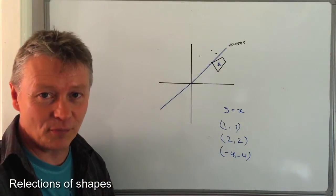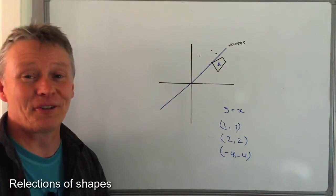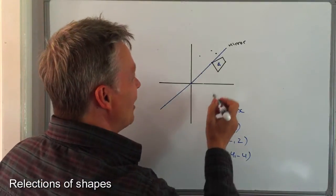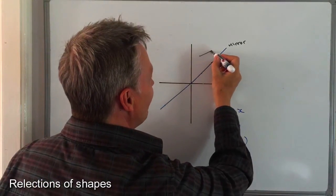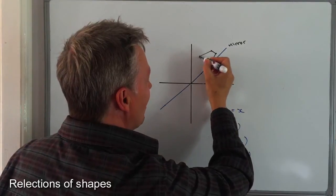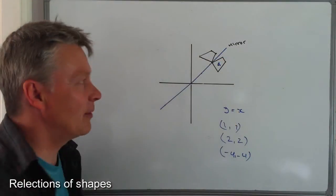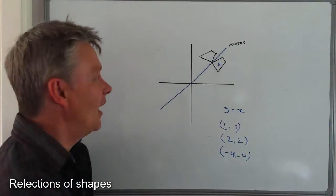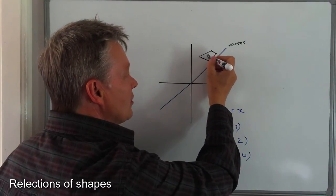So if I now join up these points, I'm just going to turn my back to the camera and join up these points, you should find that you get a fairly accurate picture of a reflected shape. In this case, they've asked us to call it shape B.